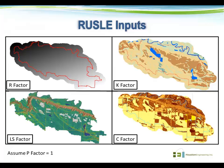I'll show some examples from one project where we gathered the various RUSLE inputs using readily available information and created rasters of each input. You can see the R factor in the upper left and the K factor showing soil erodibility in the upper right. The LS factor comes from the slope of the landscape, derived directly from our HydroDEM. The C factor in the bottom right was pulled from the Cropland Data Layer developed by the USDA, assigning C values based on crop coverage, grassland, or forest.